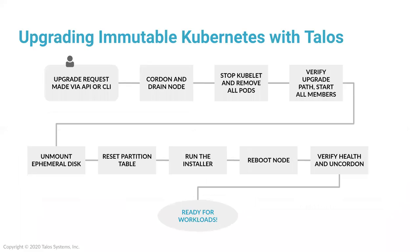I wanted to walk through the upgrade process as an illustration of one of the important workflows related to an immutable system. This workflow is implemented as a Kubernetes controller and operator underneath the hood, so it's automated. I think you could take a similar approach to handle your applications. This process is the same no matter where you're running Talos and Kubernetes — whether on cloud, virtualization, or bare metal — all handled automatically by our upgrade controller.